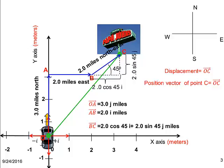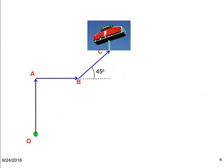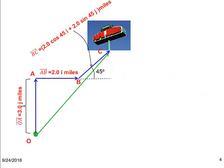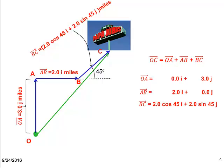We can also see that vector OC is the resultant vector, obtained by adding the displacement vectors OA, AB, and BC. In order to represent the displacement vector, we have to find the X and Y components of the vector OC.